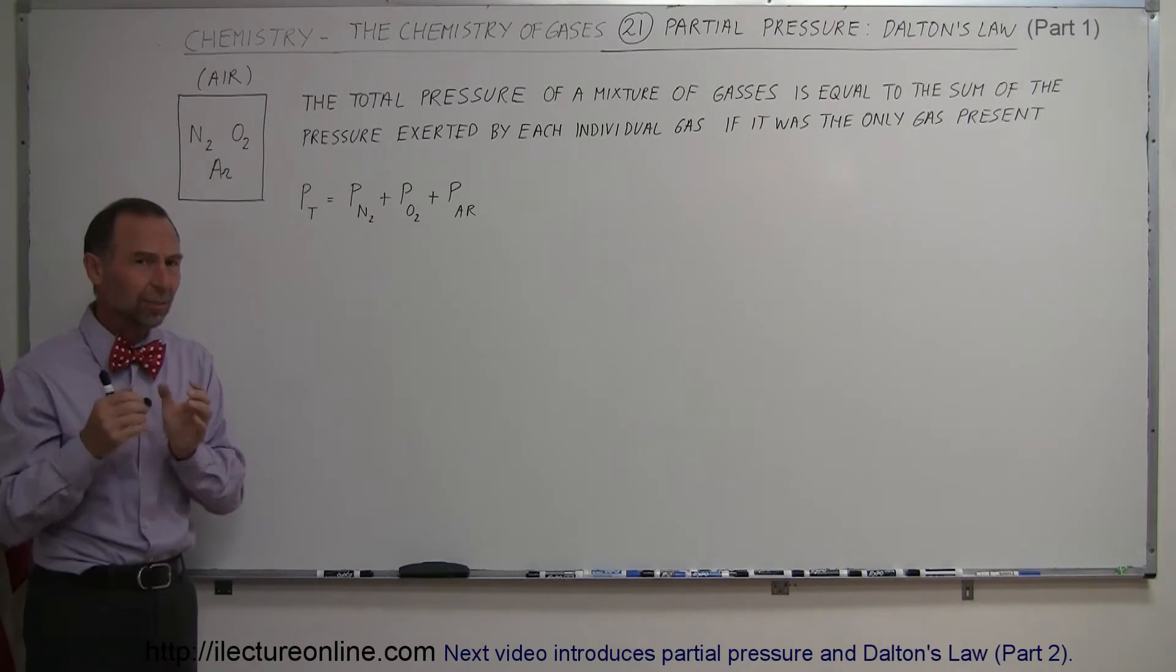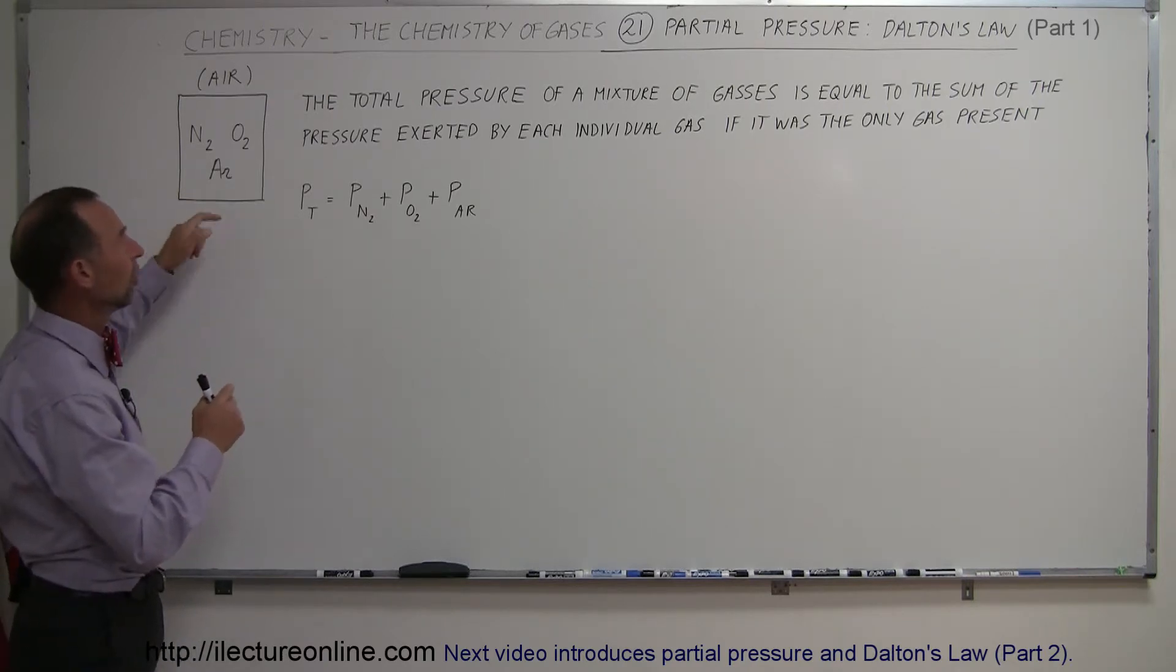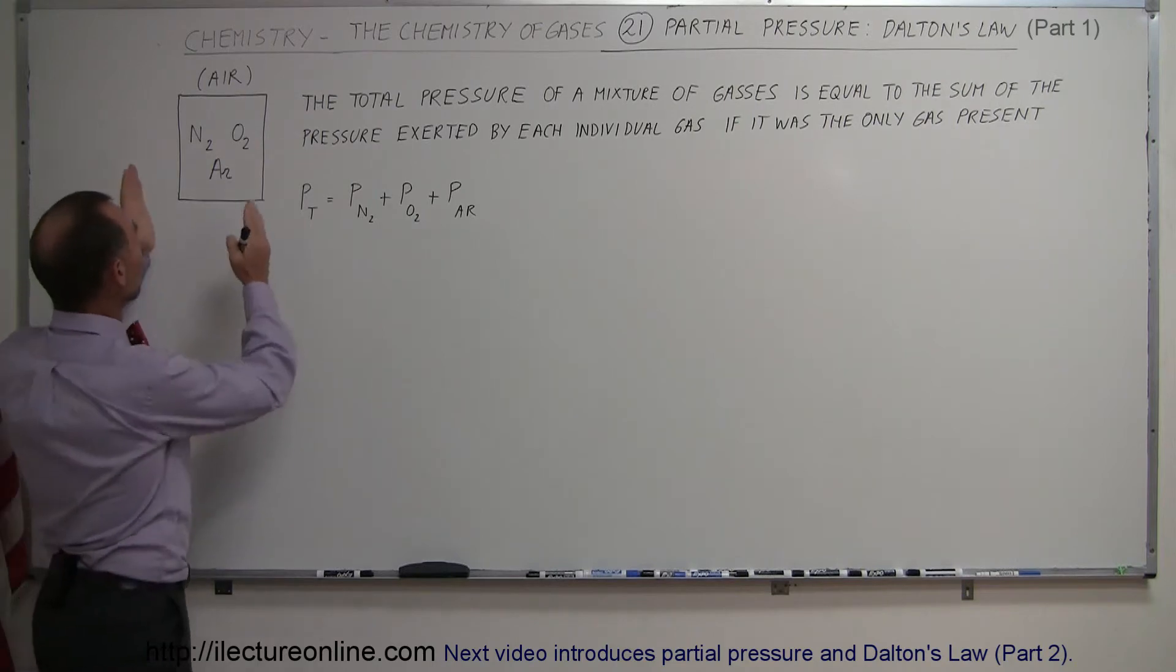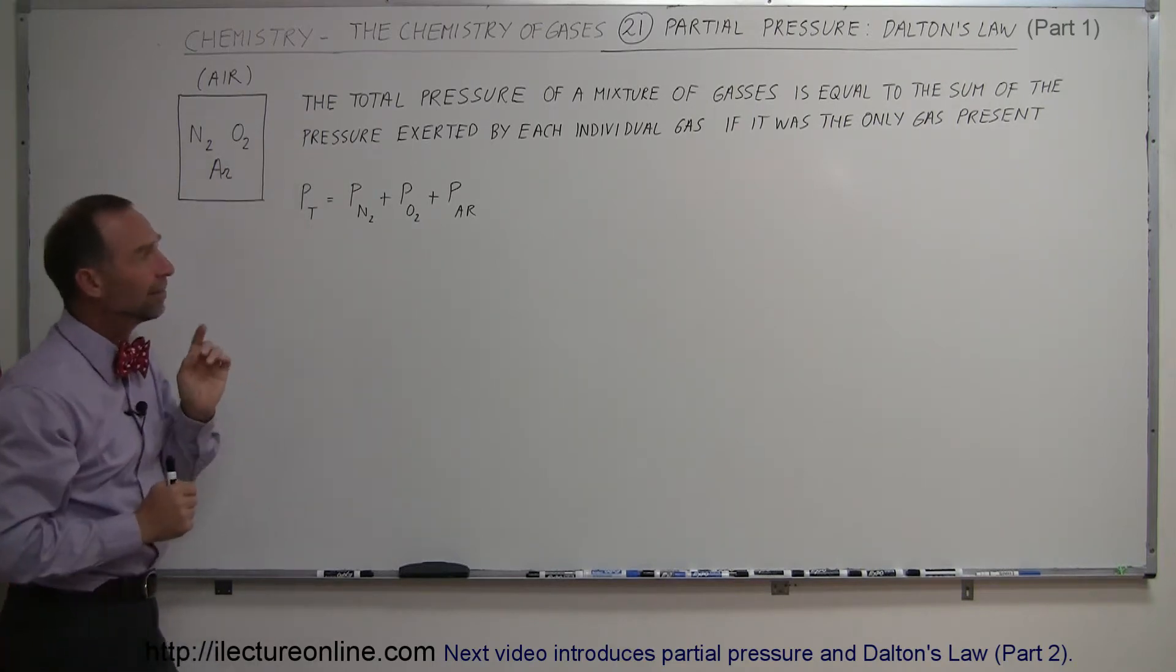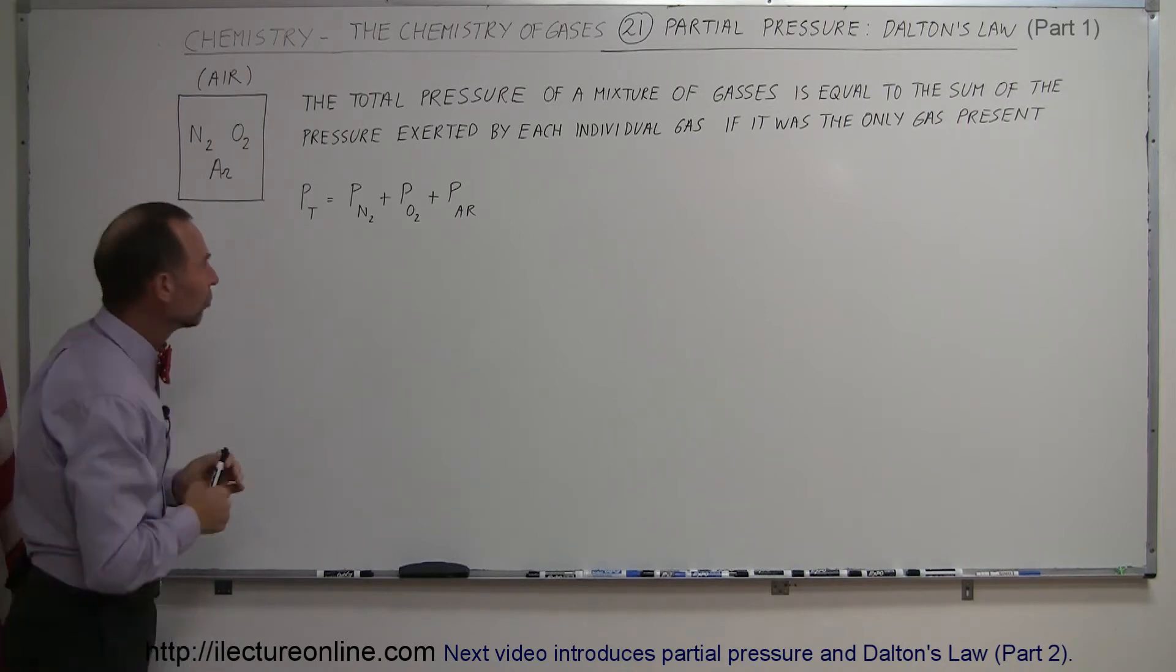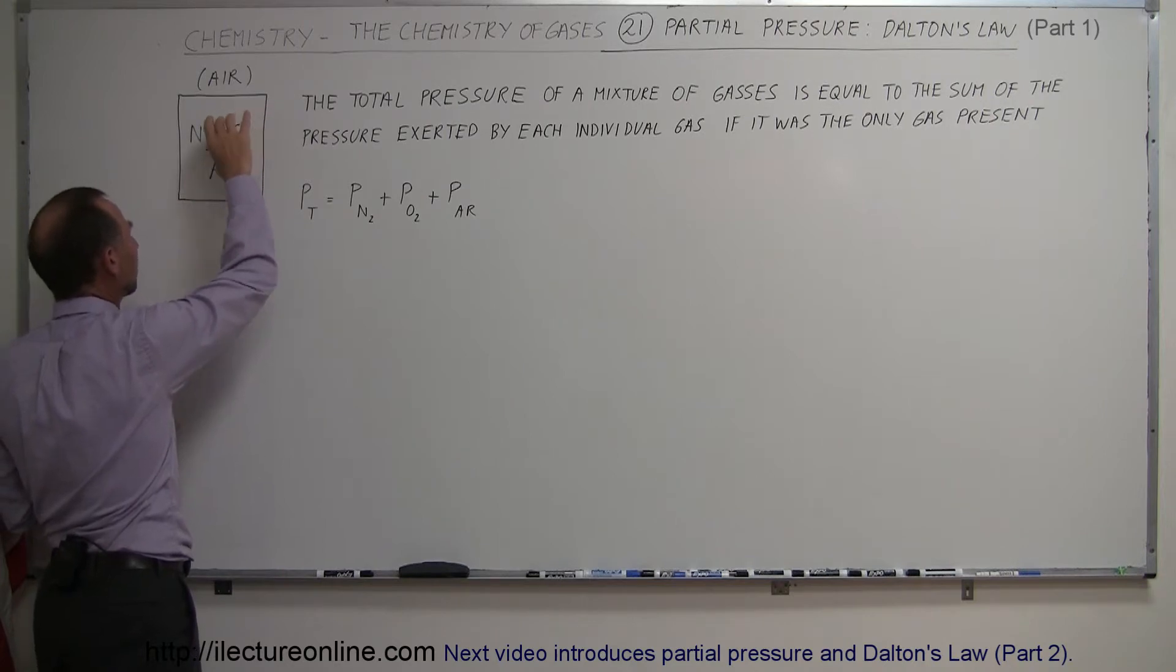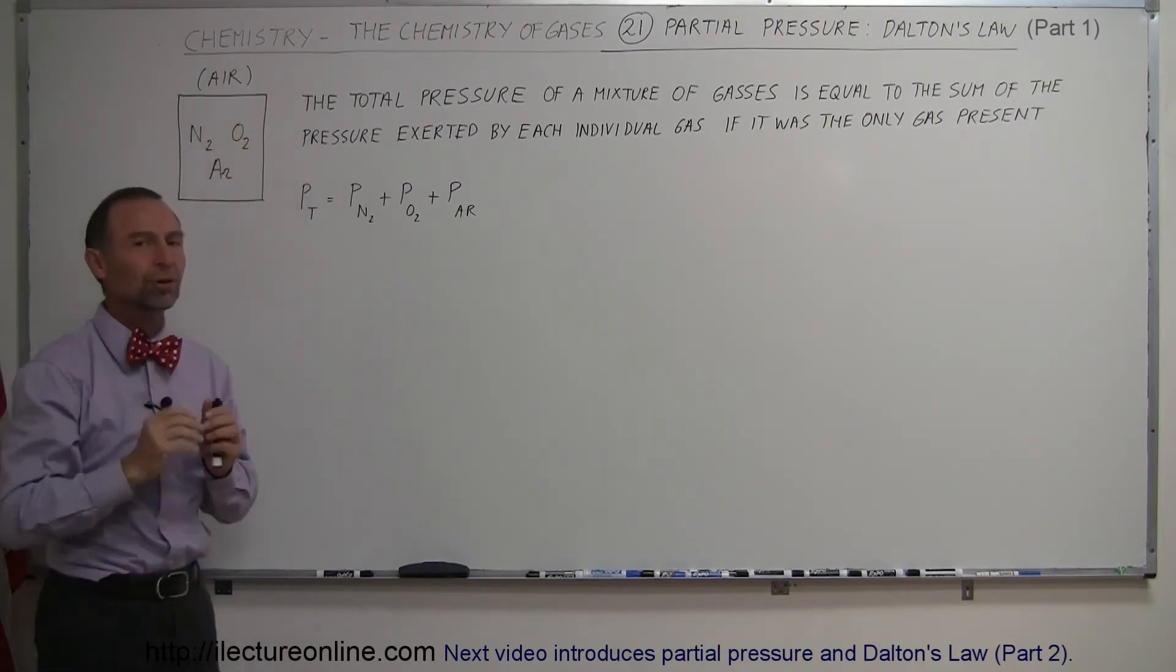What does Dalton's law tell us about the partial pressure? Well, Dalton said that the total pressure of a mixture of gases, meaning the total pressure of the air, is equal to the sum of the pressure exerted by each individual gas. So if we take the pressure exerted by nitrogen, the pressure exerted by oxygen, and the pressure exerted by argon, and add them up, we should get the total pressure of the gas.